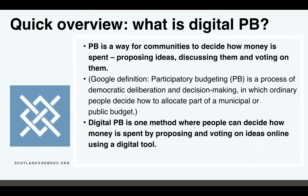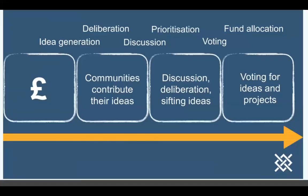A quick overview — participatory budgeting is a way for communities to decide how money is spent: proposing ideas, discussing them, and voting on them. Usually you start with a budget, then move on to idea generation where communities contribute their ideas. Those ideas get spoken about, discussed, and prioritised, then sifted through, and finally go to a voting phase where winning projects get allocated money.